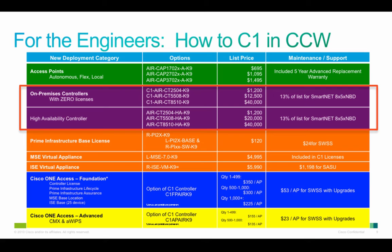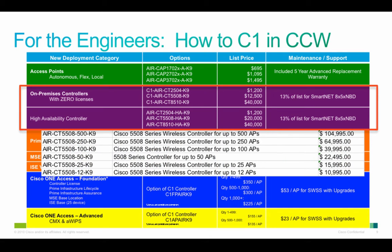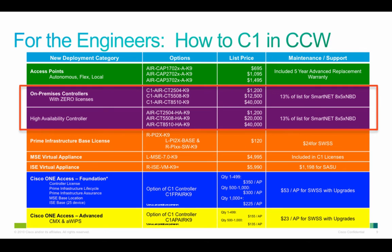Just so you know, I didn't include all of the controller options here, however there are more options than listed, but as you can see they're pretty much in line with the pricing. The $5,508 is the exception here — the $5,508 is $12,500, which is simply the cost of the hardware, and again you get the SmartNet associated with that. For high availability, you want to make sure that you get a high availability controller, and you can see the SKUs here.